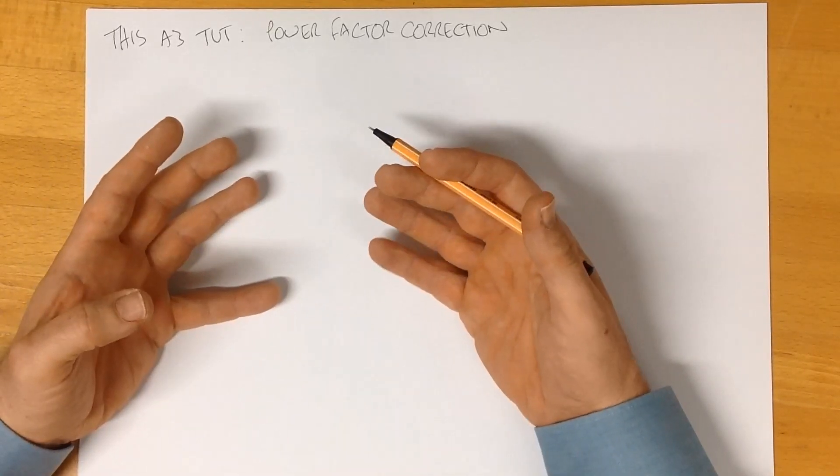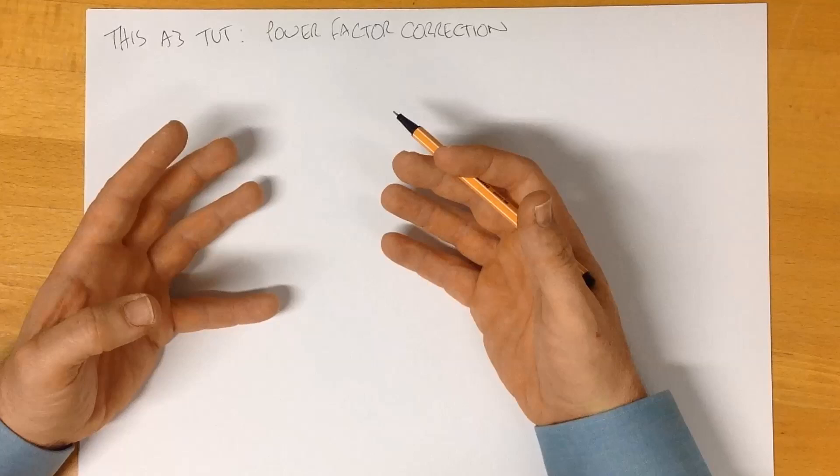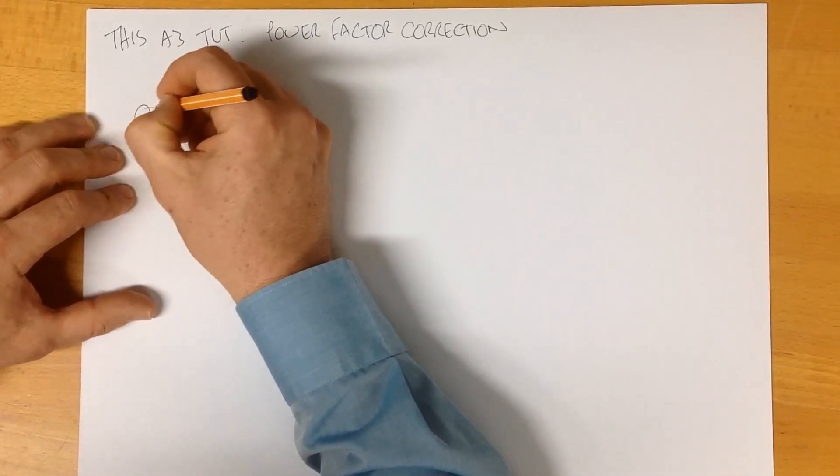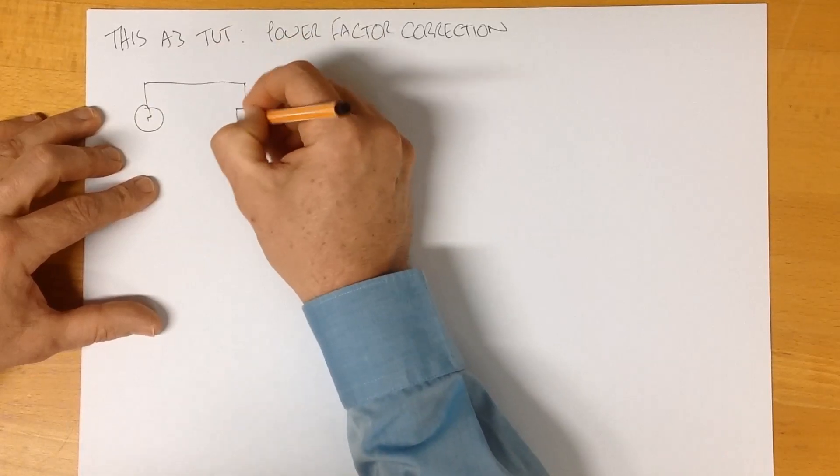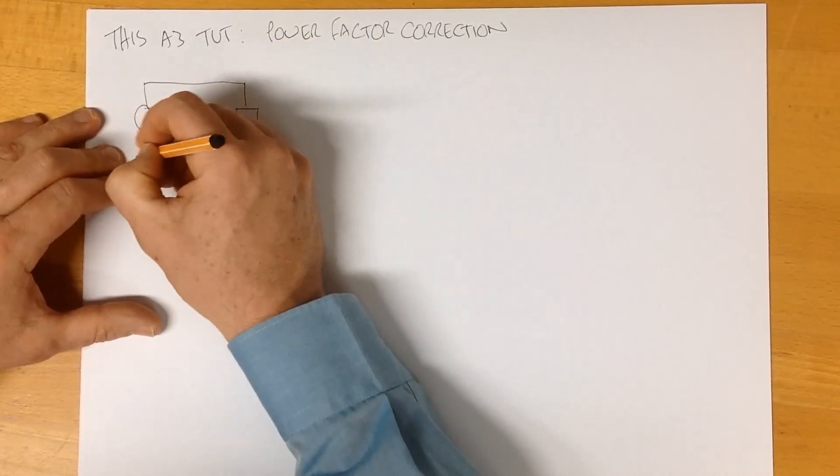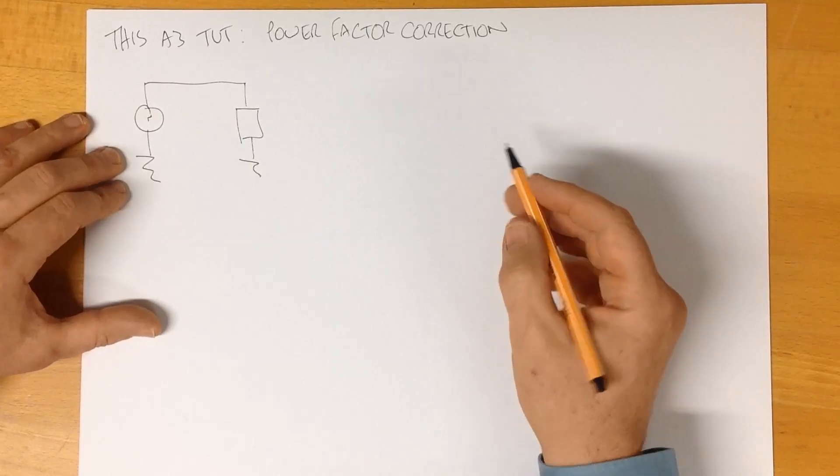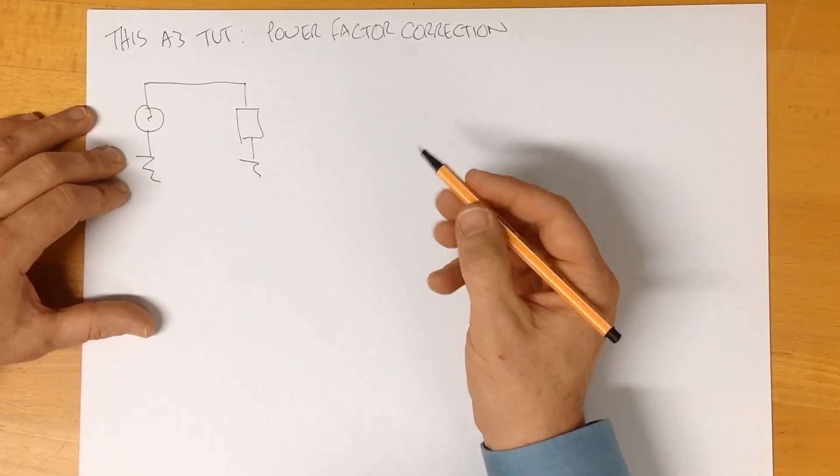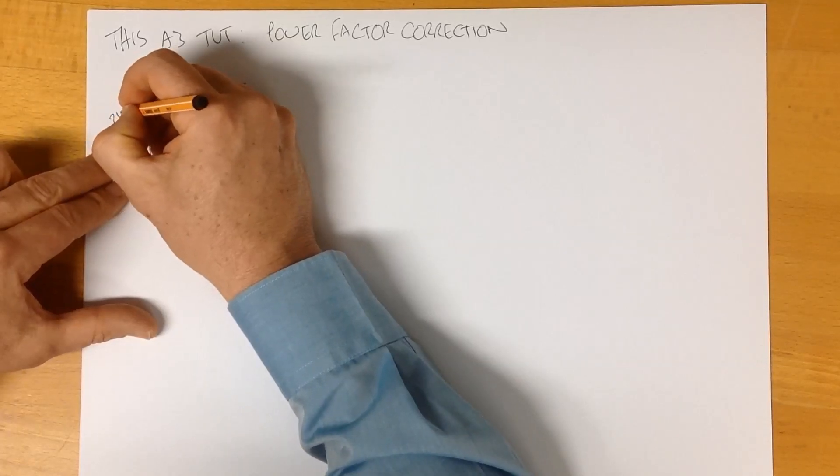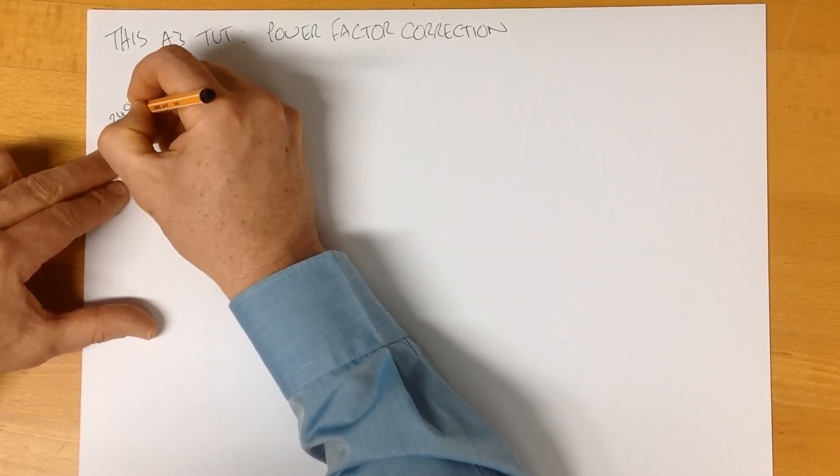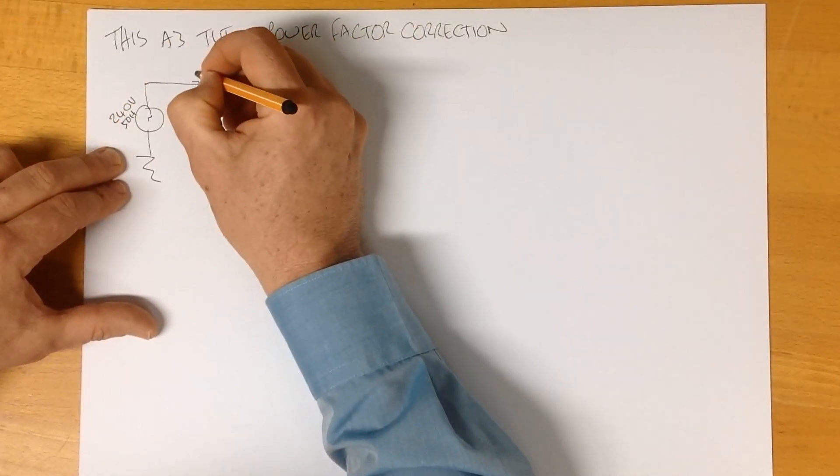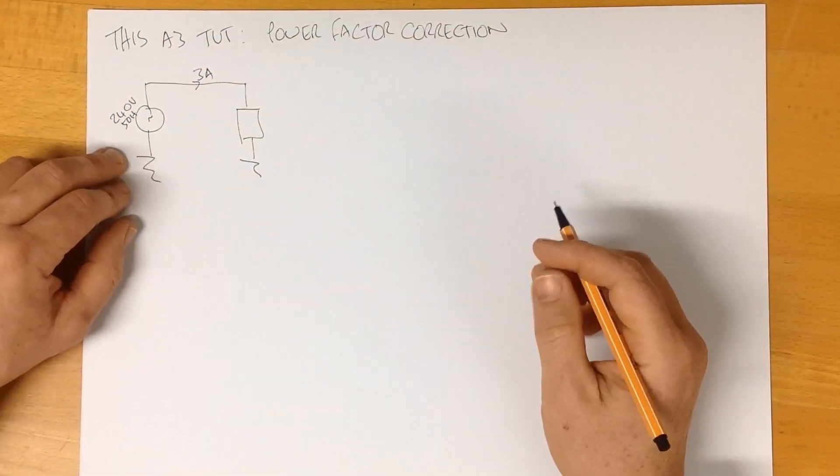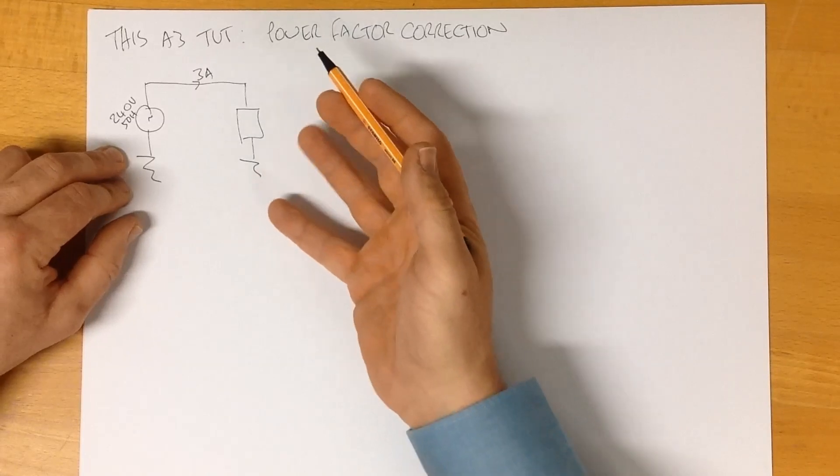We're going to do that today by using a single phase system, and we can draw something like that. Here's our supply, which comes over to a load. There's a simple schematic of our system. For the purposes of the numbers that we're going to run to help explain it, we're going to assume that it's a 240 volt supply at 50 hertz, and it's going to have a current of 3 amps.